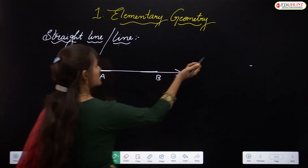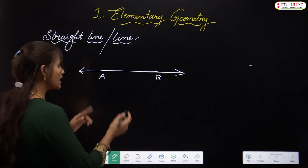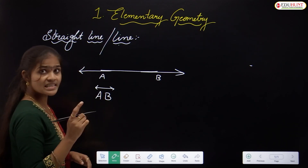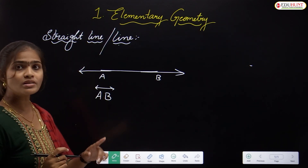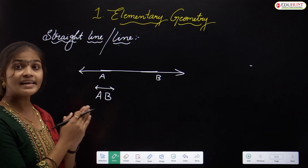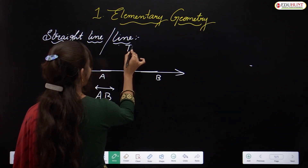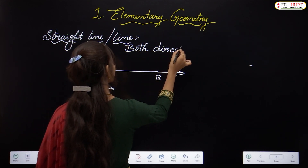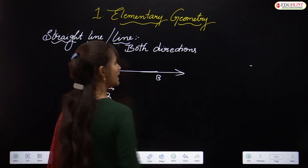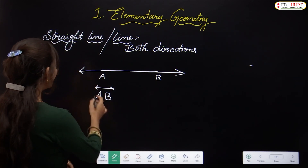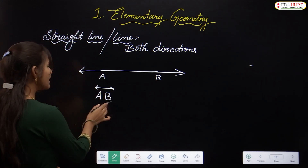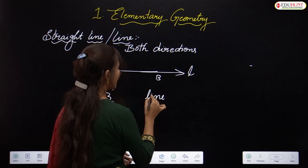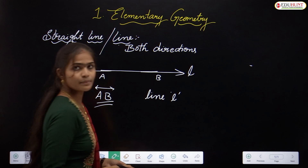Or we can represent this as AB — straight line AB. Here, on both sides you have to keep an arrow mark. Why? Because a straight line is extended endlessly in both directions. That's why we keep two arrow marks. We can also write this as line L.